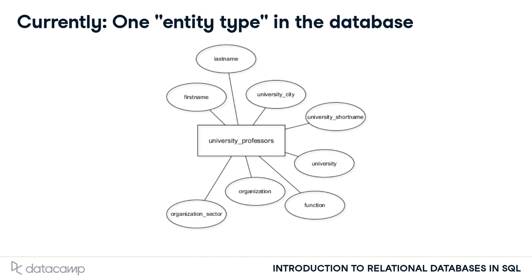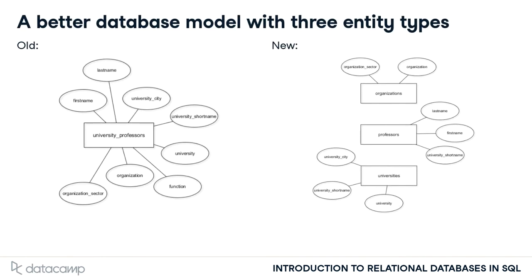Let's look at the current database once again. The graphic used here is called an entity relationship diagram. Squares denote so-called entity types, while circles connected to these denote attributes, or columns. So far, we have only modeled one entity type: university professors. However, we discovered that this table actually holds many different entity types. So this updated entity relationship model on the right side would be better suited. It represents three entity types – professors, universities, and organizations – in their own tables with respective attributes.